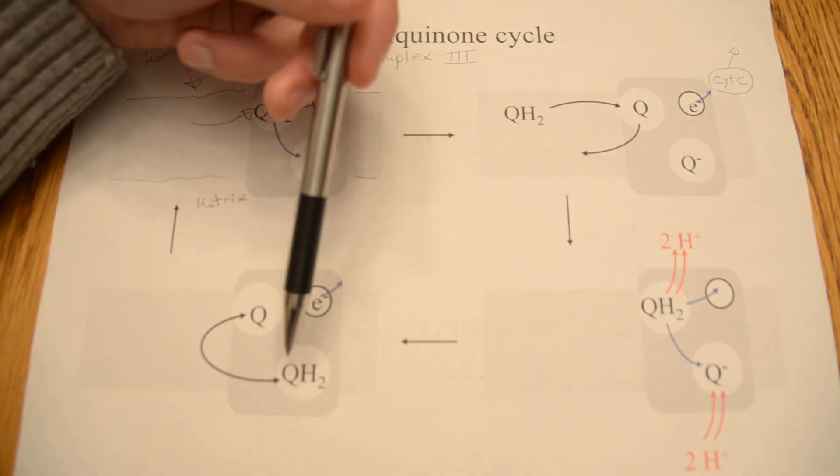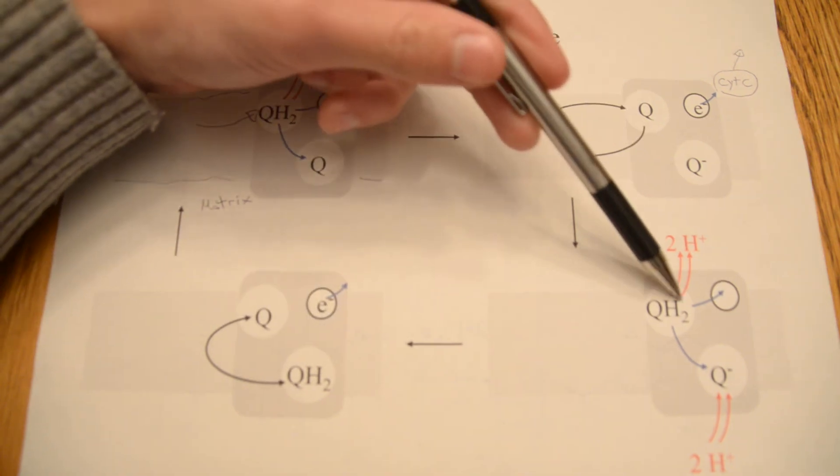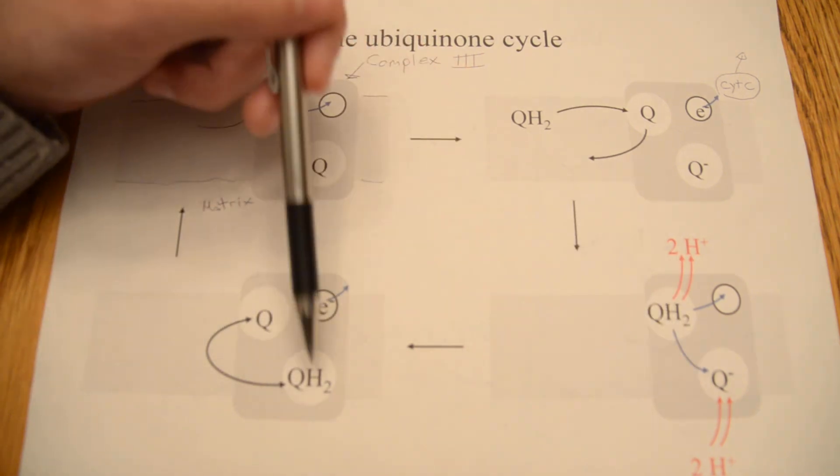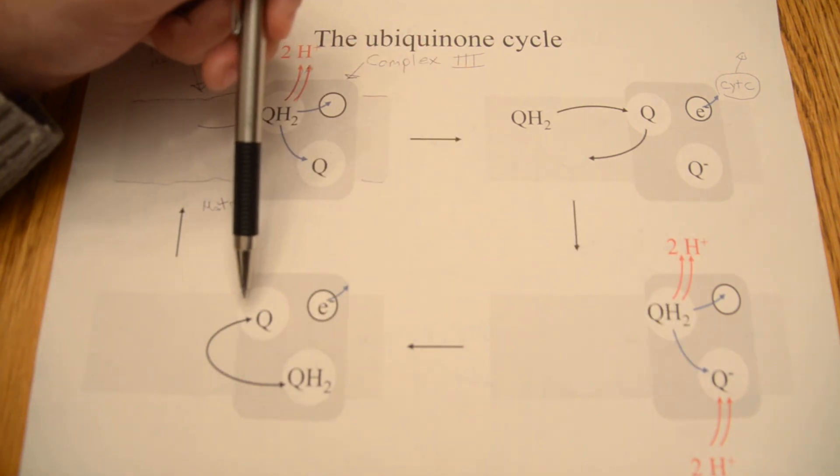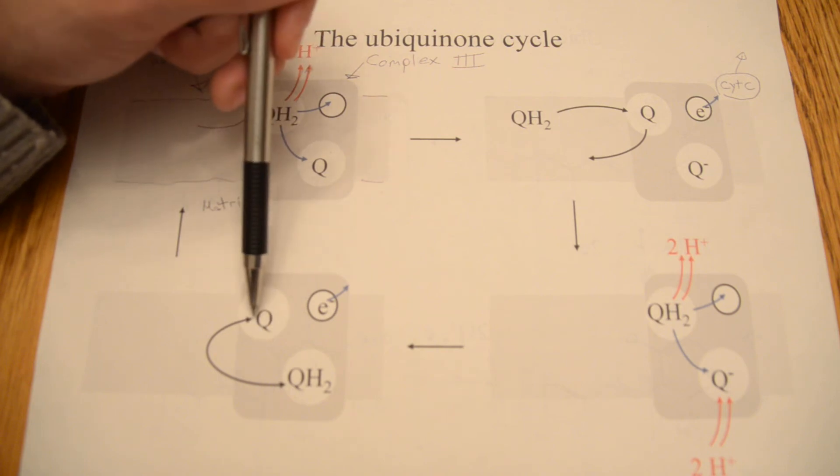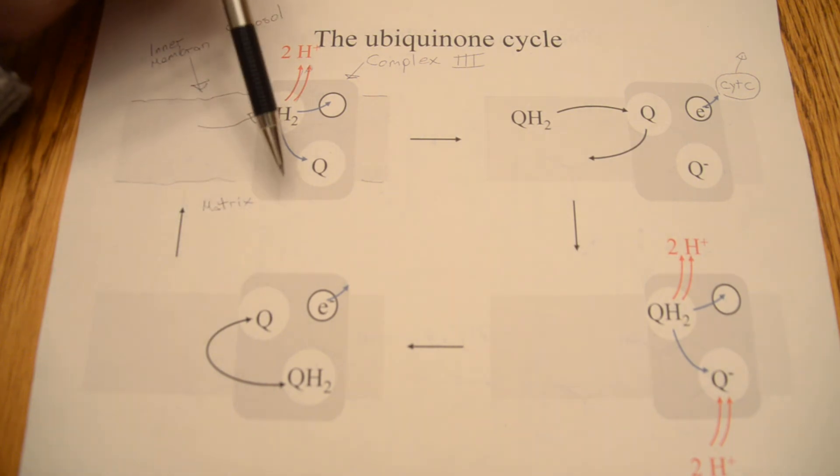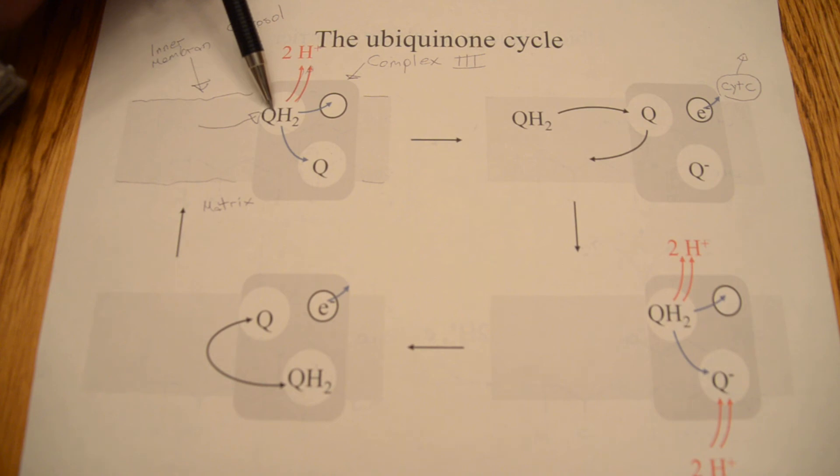So these ubiquinones will do a swap, because this guy is now fully oxidized, this guy is fully reduced, these two ubiquinones will swap spaces, and this oxidized ubiquinone will swap back up to here, and you'll have the reduced one in the active site, and the whole cycle will continue.